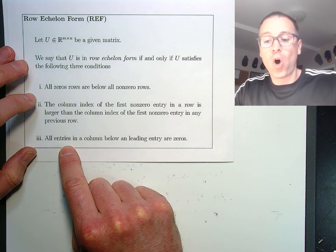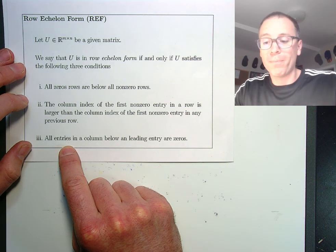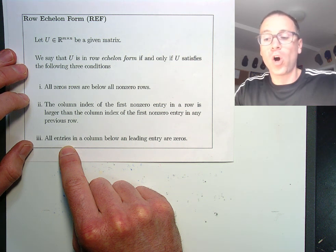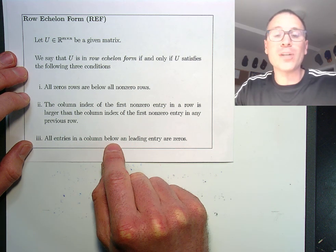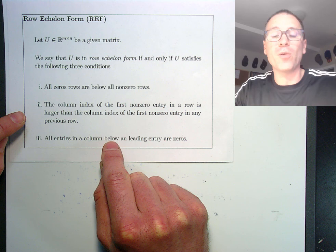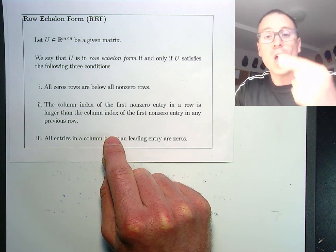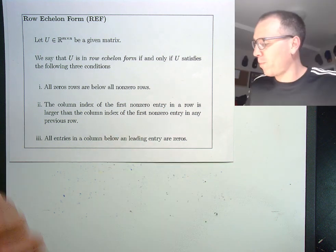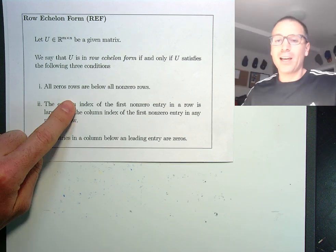Finally, the third condition is that all entries in a column below a leading entry are zero. So remember that a leading entry is the first non-zero entry when you look in any given row. When you look under that, they should all be zeros. Let's go ahead and analyze this together.